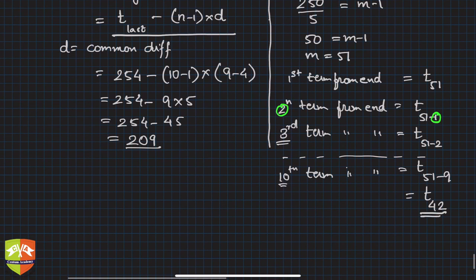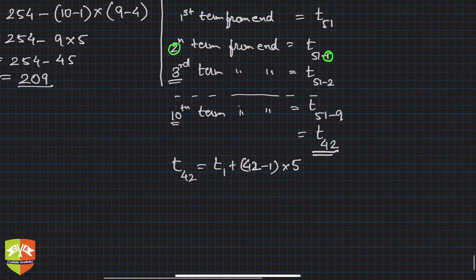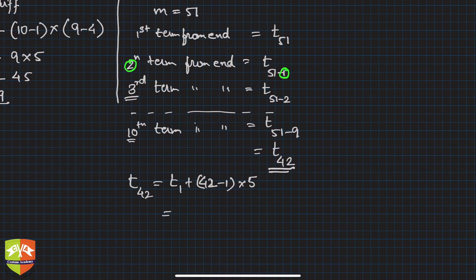Can't we find out t_42? Yes we can. t_42 is t_1 plus 41, or let me write like that, (42-1), that is n minus 1, into d, which is 5. Let's deploy the values. t_1 was how much? t_1 was 4.